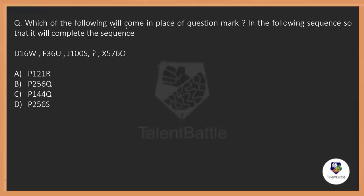Which of the following will come in the place of the question mark in the following sequence so that it completes the sequence? They gave us four terms, and they are asking us which is going to be the fifth. So whenever we have a series related with letters, you can see here: D, W, F, U, J, S.